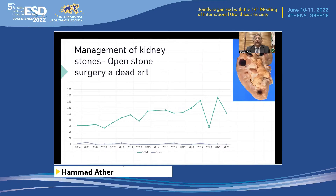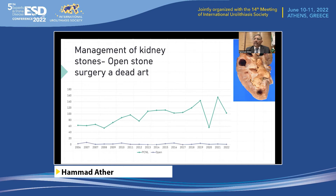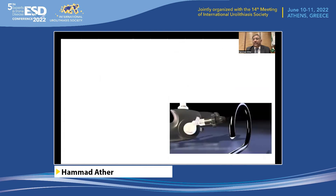What about kidney stones? Even in our part of the world, open surgery is becoming a dead art. Looking at data from 2006 to 2022, open surgeries for stones in the adult population was significantly low. A very similar trend is noted for pediatric patients as well, because a vast majority are dealt with by lithotripsy. And once we had finer endoscopes, a significant number are now treated with percutaneous surgery. We do about over 150 PCNLs per year, and the numbers are increasing with the finest scopes being introduced.